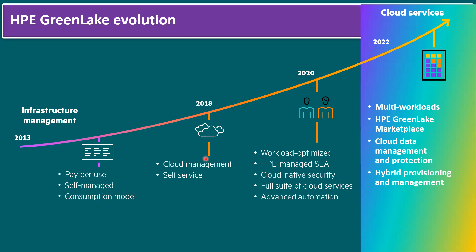In 2020, additional services were added within GreenLake, including workload optimization, HPE managed SLA, cloud-native security, and a full suite of cloud services — bare metal as a service, virtual machine as a service, containerization as a service, firewall as a service, load balancer as a service, data protection as a service, and so on.